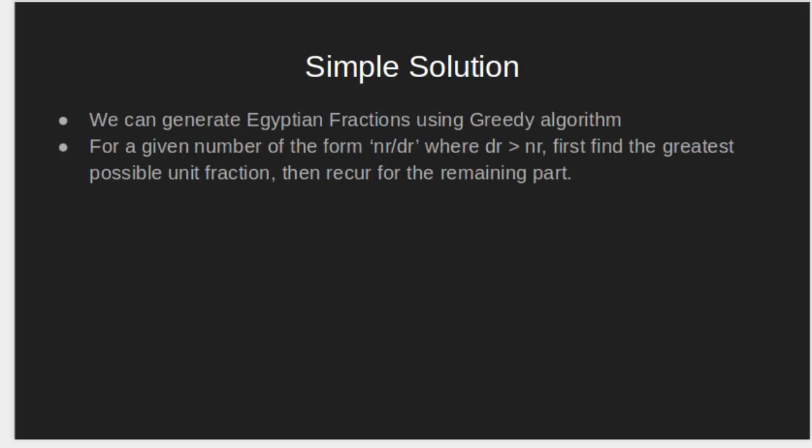Simple solution: We can generate Egyptian fraction using greedy algorithm. For a given number of the form nr by dr, where dr is greater than nr, first find the greatest possible unit fraction, then recur for the remaining part.